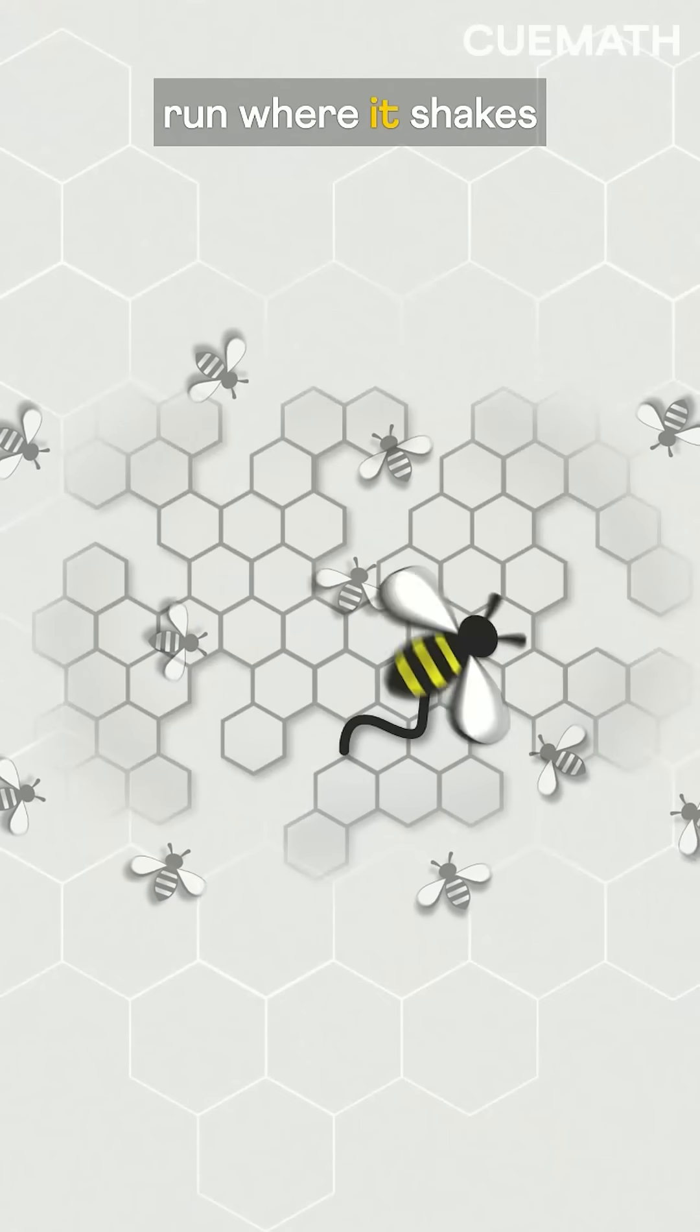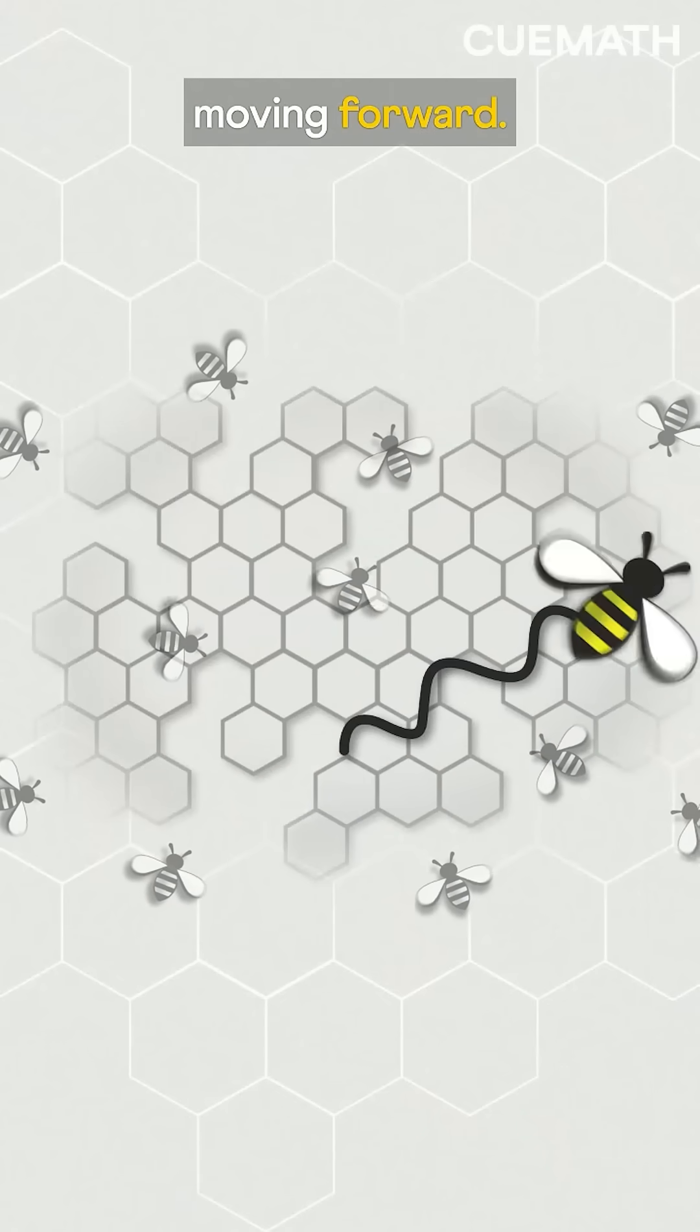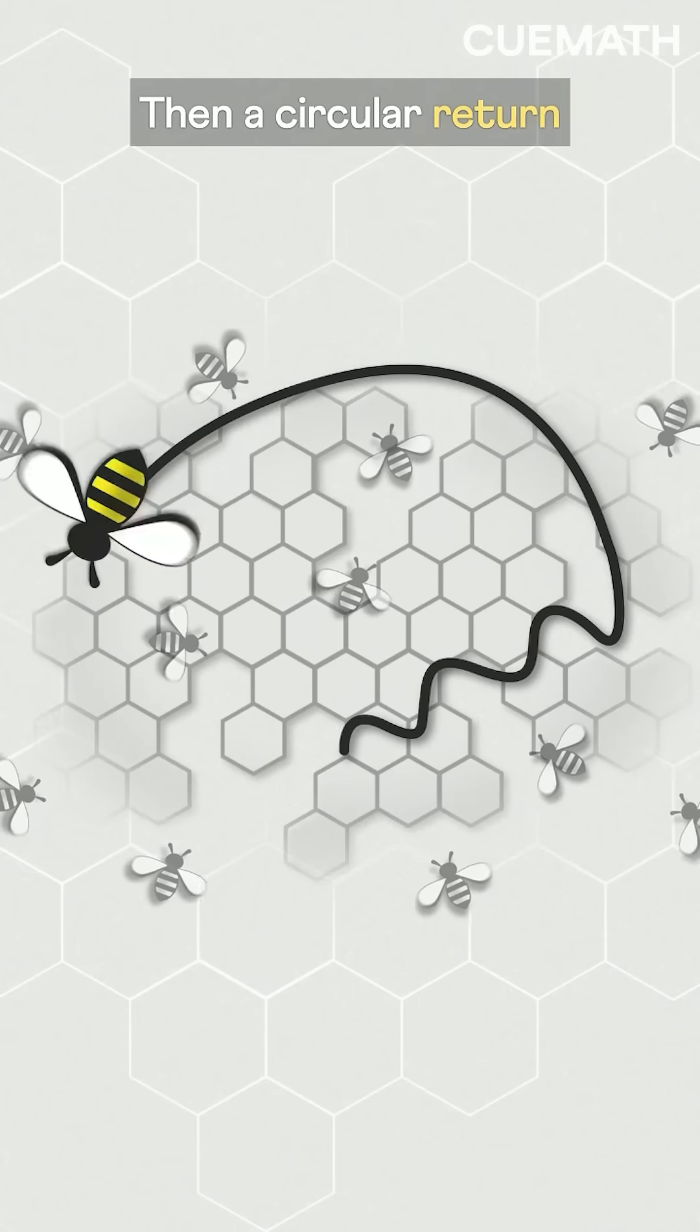First, a waggle run where it shakes its body while moving forward, then a circular return to the start.